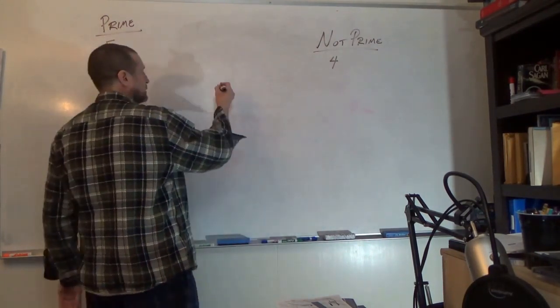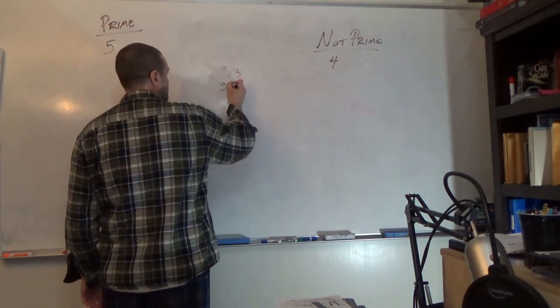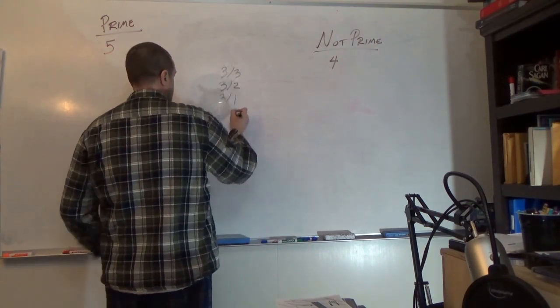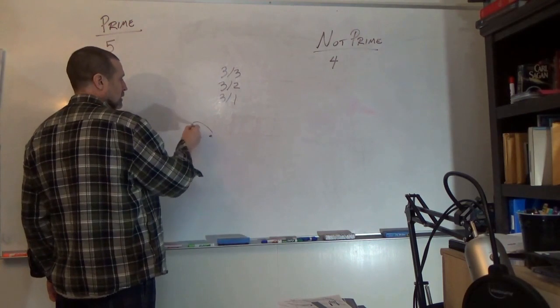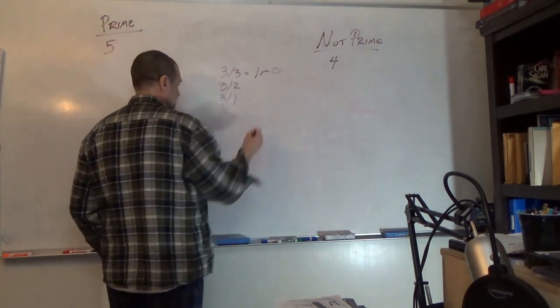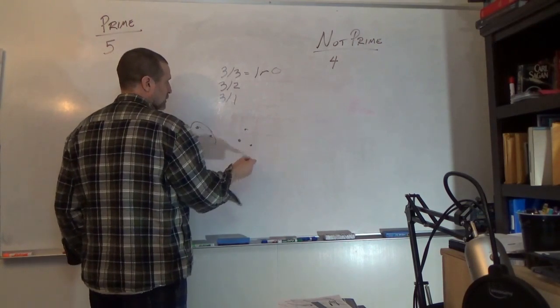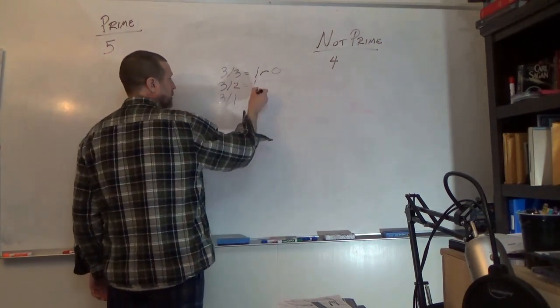Let's try 3. 3 divided by 3: 1 remainder 0. 3 divided by 2: well, 1 group with 1 remainder.